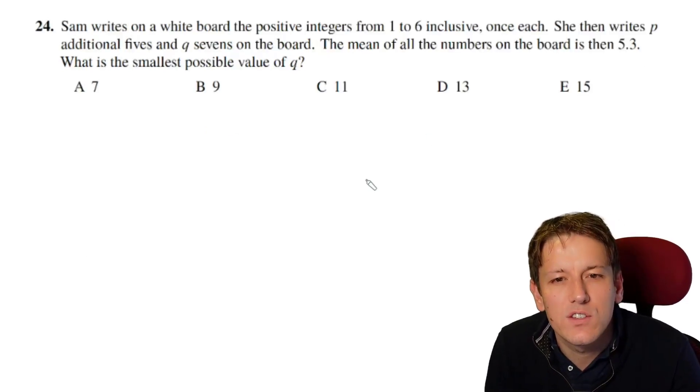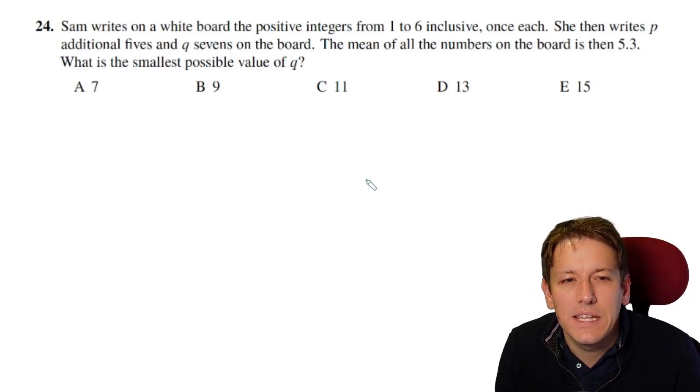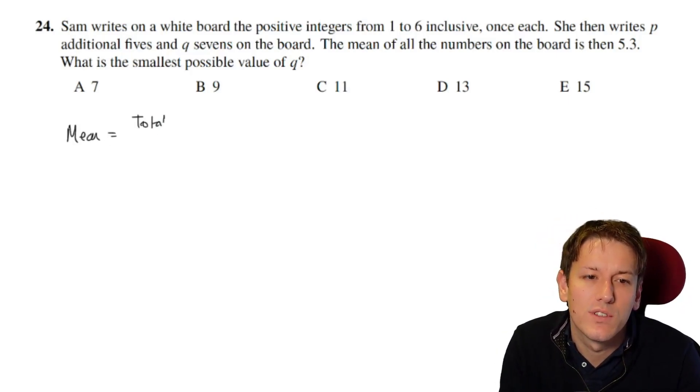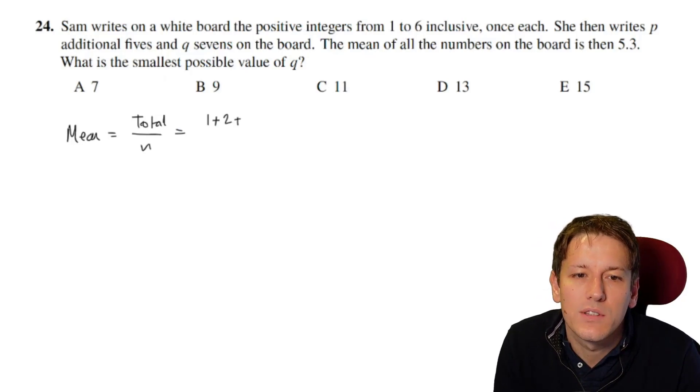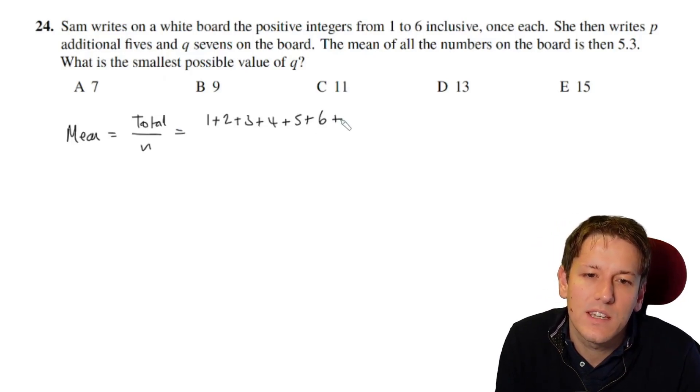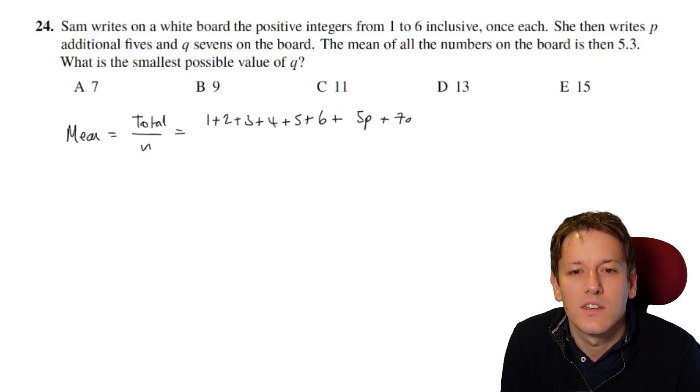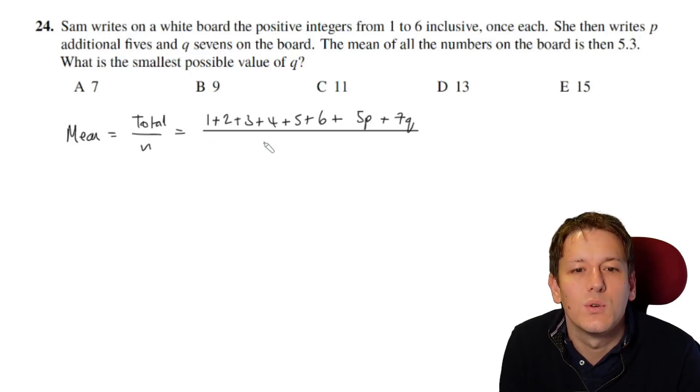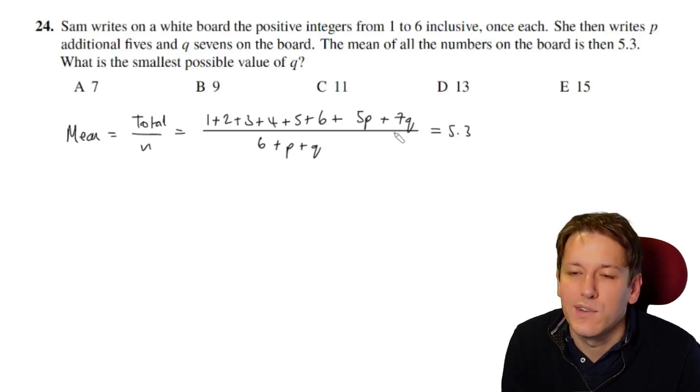Sam writes on a whiteboard all the positive integers from 1 to 6 inclusive once, and then also p fives and q sevens, and then the mean is 5.3. So I'm just going to write that down algebraically. The mean is always the total divided by n, where n is like the number of numbers. So if I add these numbers together, we're going to do 1 plus 2 plus 3 plus 4 plus 5 plus 6, and then we're going to have p fives, so they'll add together to give 5 times p, and q sevens, so that'll add together to give 7 times q, and the total is going to be, well, there's 6 plus p plus q numbers here, so that will be the total, and we need that total to be equal to 5.3.